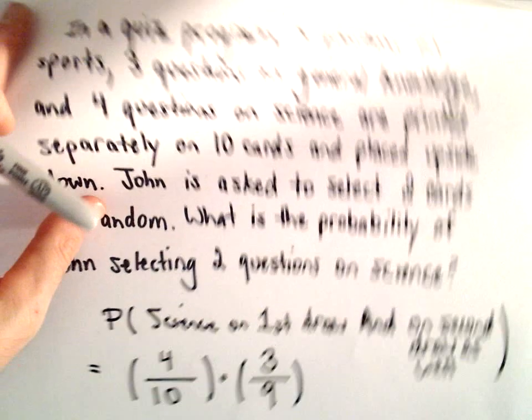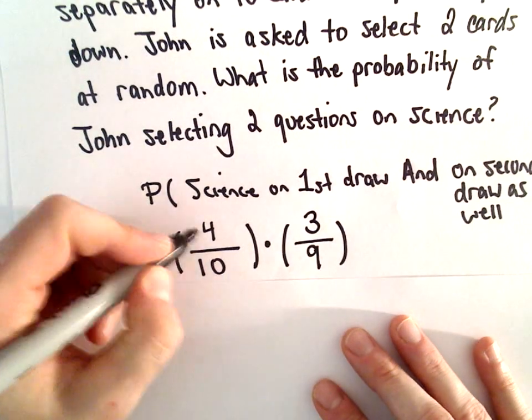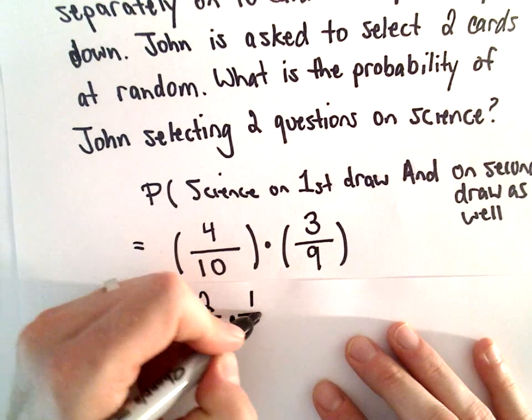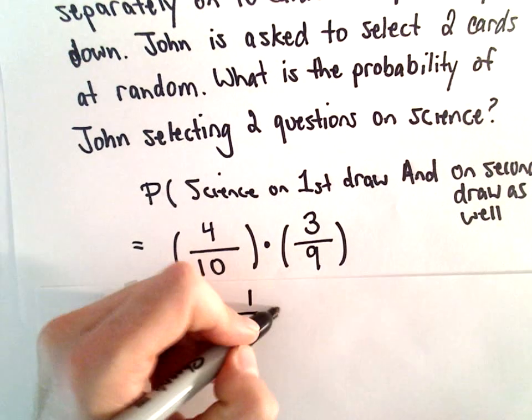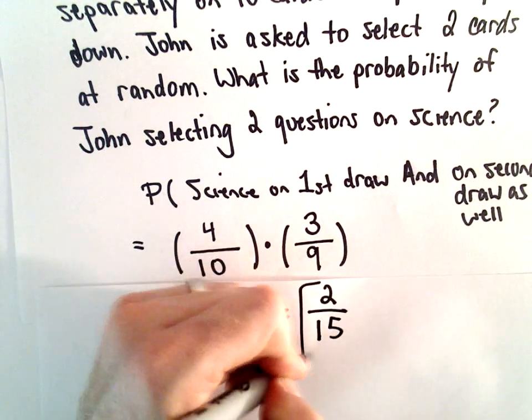So now all we have to do is just multiply and simplify. So let's see, four divided by ten will be two-fifths, three-ninths is one-third, and if we multiply those together, we'll get two out of fifteen as our probability.